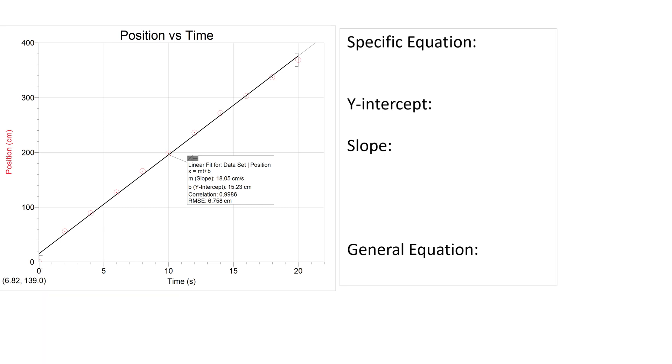For the specific equation, this is when we take the actual numbers from our line of best fit and we write an equation specifically for the thing that we are studying, which was the car in this case. For position I'm going to use x instead of y. It's a linear relationship so our equation is going to look like y equals mx plus b, but instead of using y I'm going to write x for position and instead of using m for slope I'm going to actually use this number with the units, 18.05 centimeters per second.